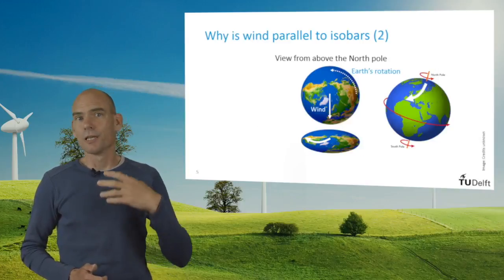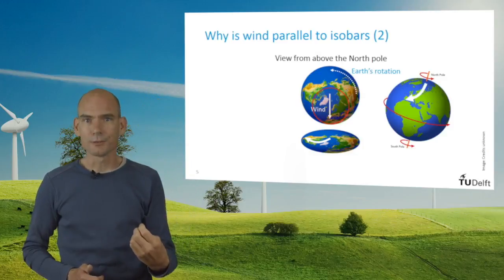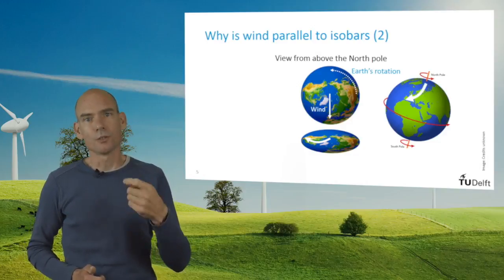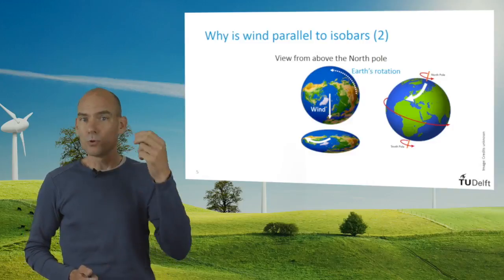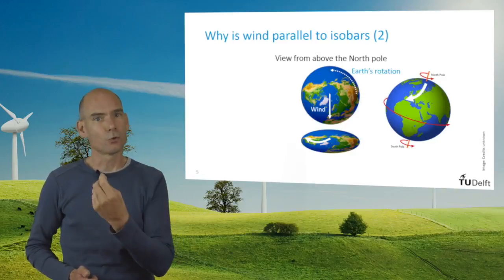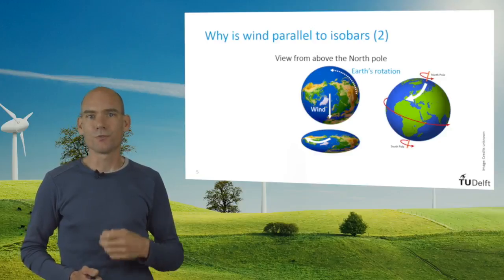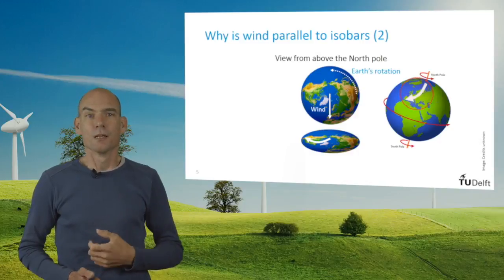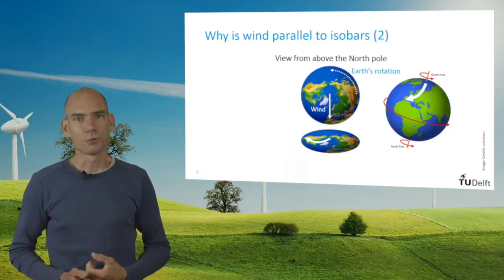The same happens if we would have wind moving in a straight line from the north pole to the equator. Looking at the Earth from the top, so at the north pole, the Earth's rotation is counterclockwise. While the wind is moving from the pole to the equator, the Earth underneath it therefore moves to the right. Looking at the wind from a frame of reference fixed to the Earth, the wind would then appear to curve to the right. The fictitious force that causes this curvature is called the Coriolis force.